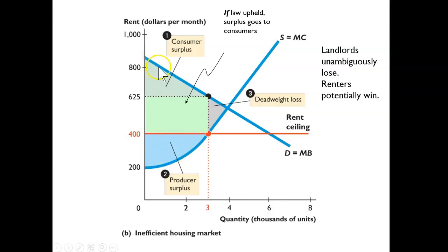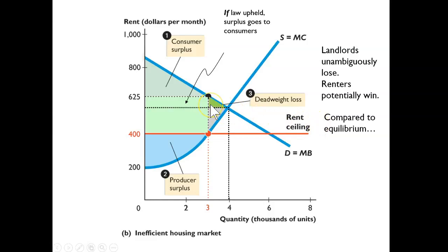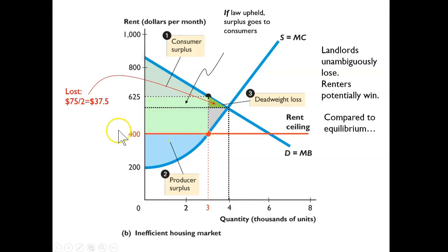We can see that the landlords unambiguously lose out of an enforced price ceiling. The question is: do the consumers gain overall? To find that out, we need to compare to equilibrium. In the equilibrium condition, there was a part of consumer surplus that existed, but due to the price ceiling, that part of the consumer surplus has been lost — and it turns out that's about $37.50.